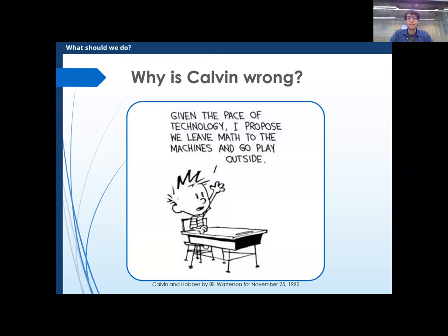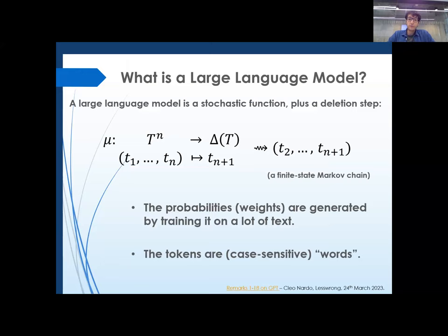So what is a large language model? A large language model is a stochastic function, which means it doesn't always give you the same output for the same inputs — it has a deletion step. What it does is take a few tokens. Tokens are words in a general sense: characters, words. It gives you the next token, and if it's run out of space it deletes the first one. Effectively, this is a finite-state Markov chain which generates token by token.